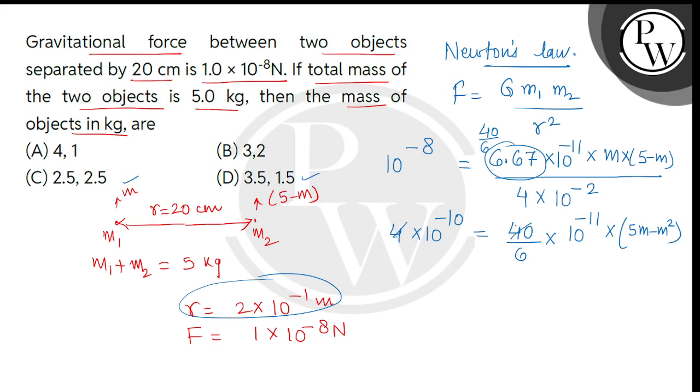This will cancel. This is 10. Now we will get cross multiplication 6 and this is 10 to the power minus 10. So 10 to the power minus 10 also from both sides. We will get 6 equal to 5m minus m square.